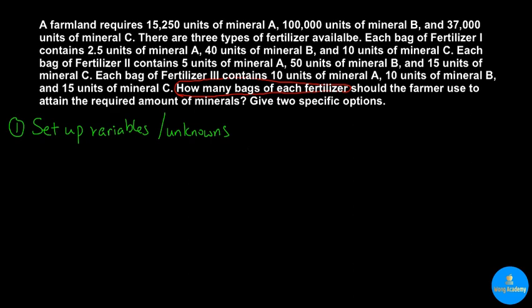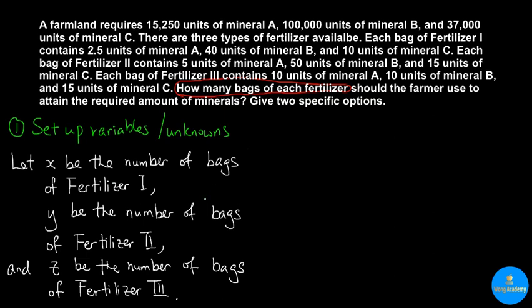We should answer the question directly by letting x represent the number of bags of fertilizer 1. Notice that the phrase 'the number of bags' is very important. If you only say let x be fertilizer 1, it doesn't make sense. We don't need x to represent fertilizer 1; x is representing the number of bags of fertilizer 1. Similarly, y and z represent the number of bags of fertilizer 2 and 3 respectively.